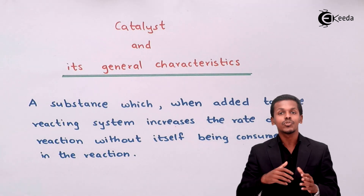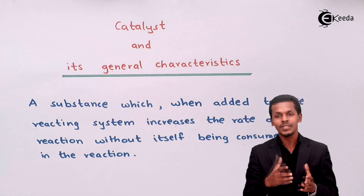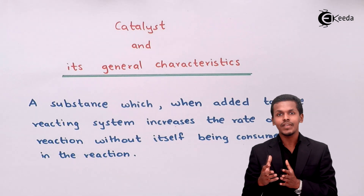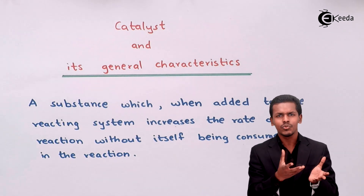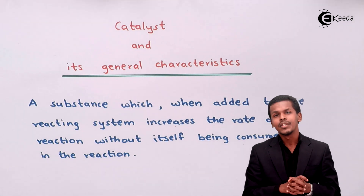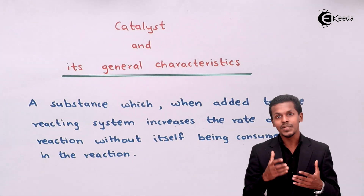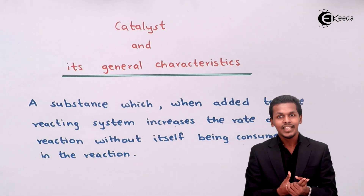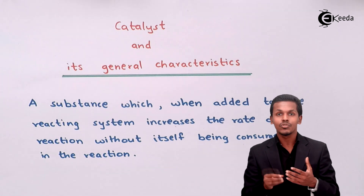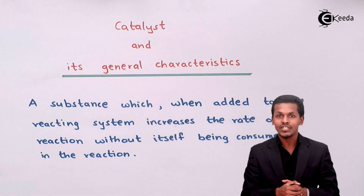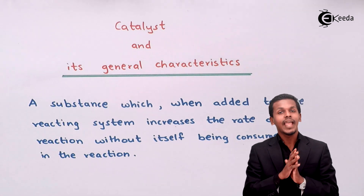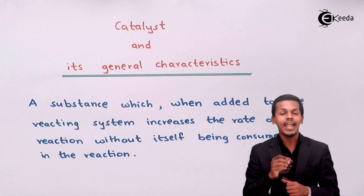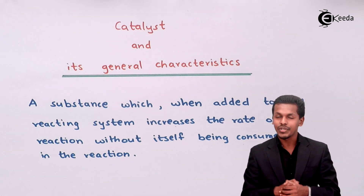The main role of the catalyst is to alter the rate of reaction — it increases the rate of reaction. This means we can get the product as soon as possible, reducing the time needed. So for any irreversible reaction, we can add a catalyst so as to get the product in a very short duration of time.